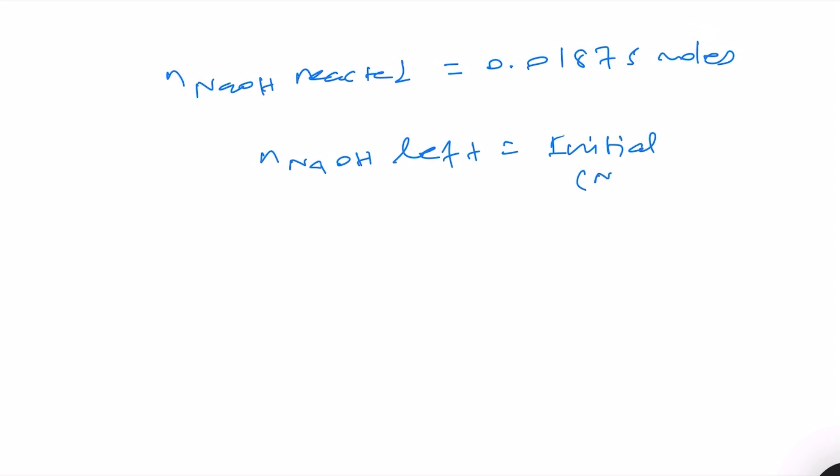So initial NaOH that we already know was 0.025 moles minus the amount reacted, which in this case is 0.01875, is equal to n is equal to 0.00625 moles is the amount that is left.